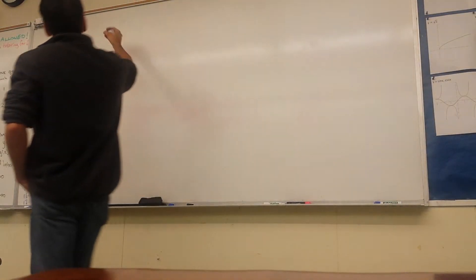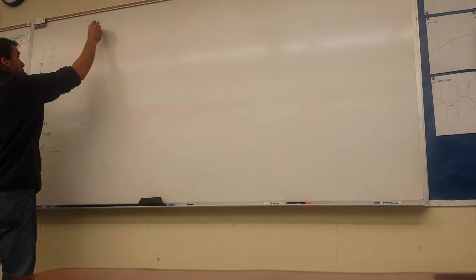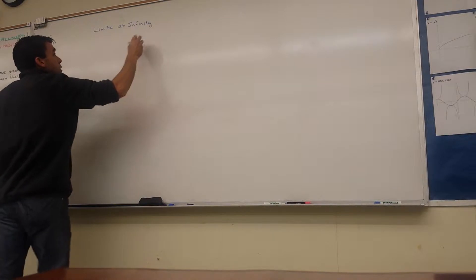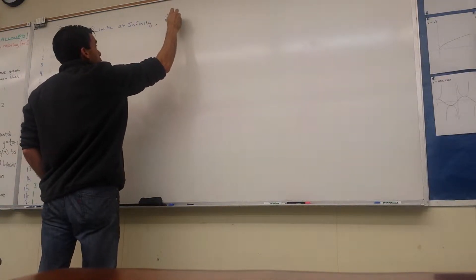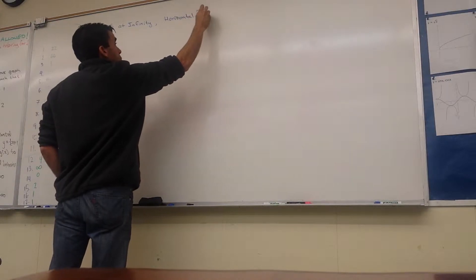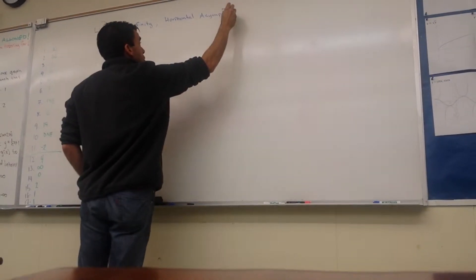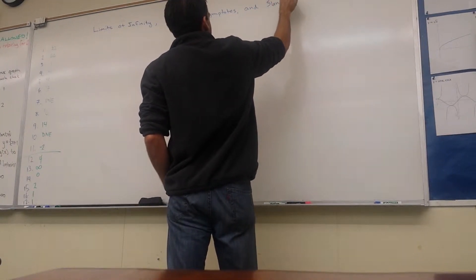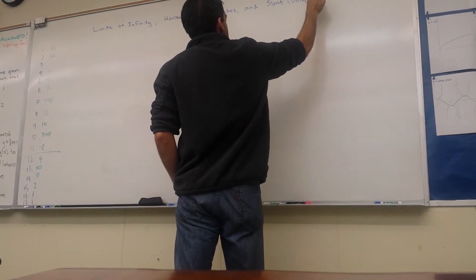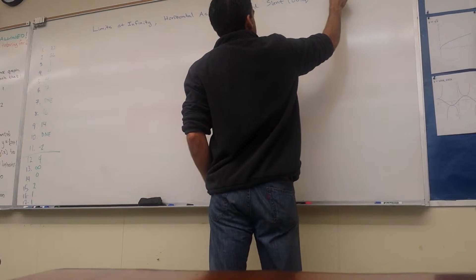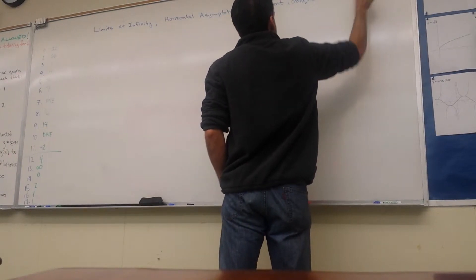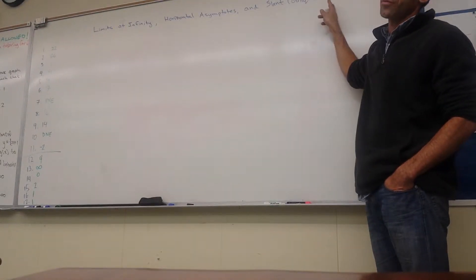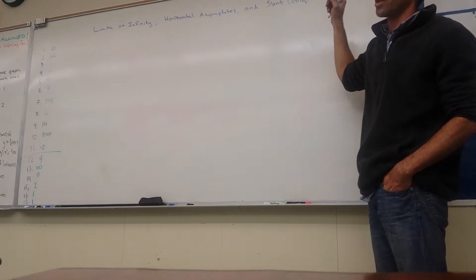Let's take a look at this new lesson. This is going to be called limits at infinity, horizontal asymptotes, and slant — or our book calls them oblique asymptotes. We may or may not get to the last one today; we can save it for another time, maybe even after the final, because I probably won't teach much next week — we'll just review.